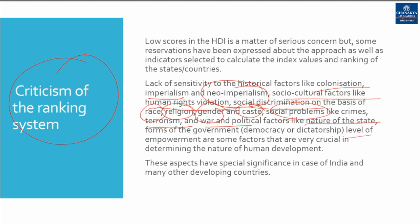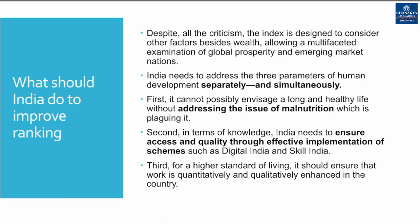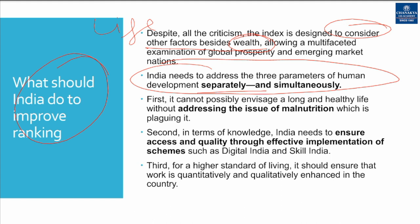This shows that the ranking system is not very favorable to third world countries. These aspects have special significance in case of India and many other developing nations because India was ultimately a colonial state in the past. Despite all the criticism, the index is designed to consider other factors besides wealth, like life expectancy, standard of living, and education. India needs to address the three parameters of human development separately and simultaneously, taking an approach of cooperation and coordination.